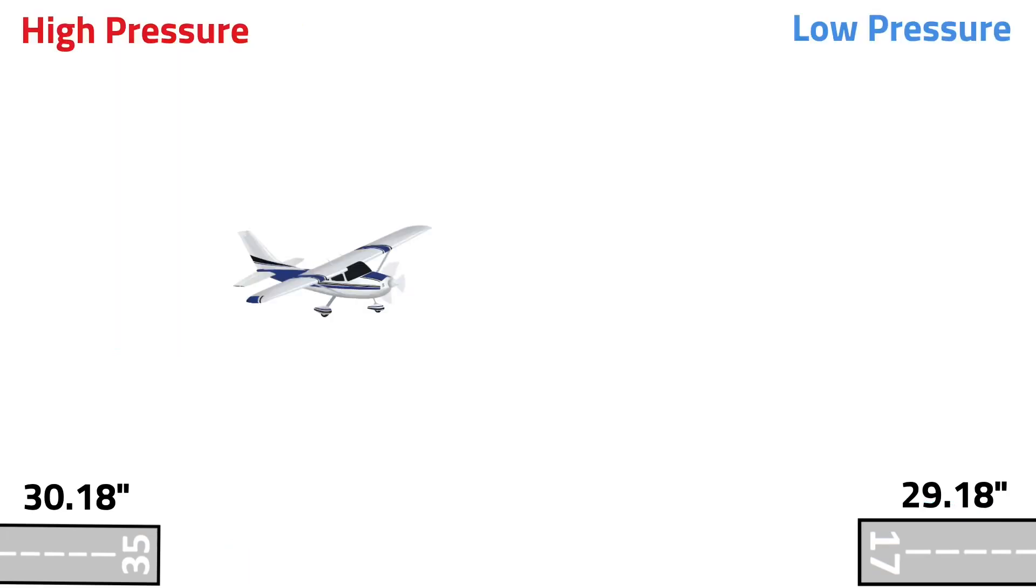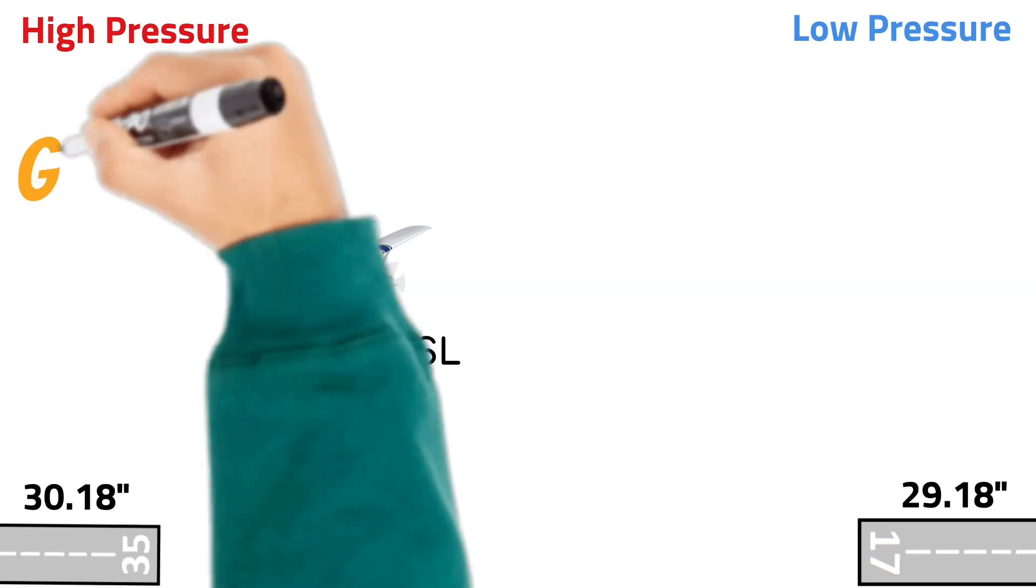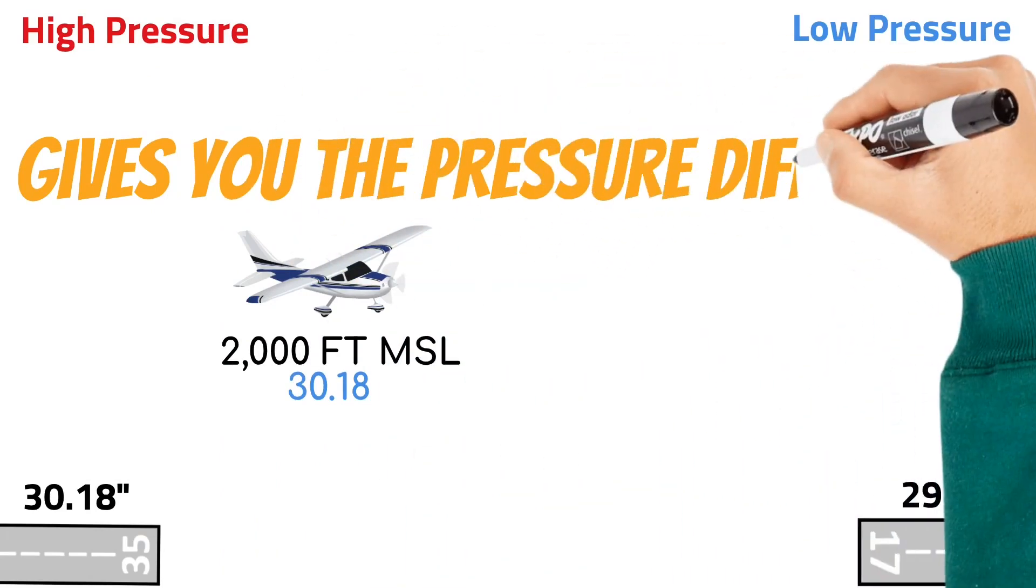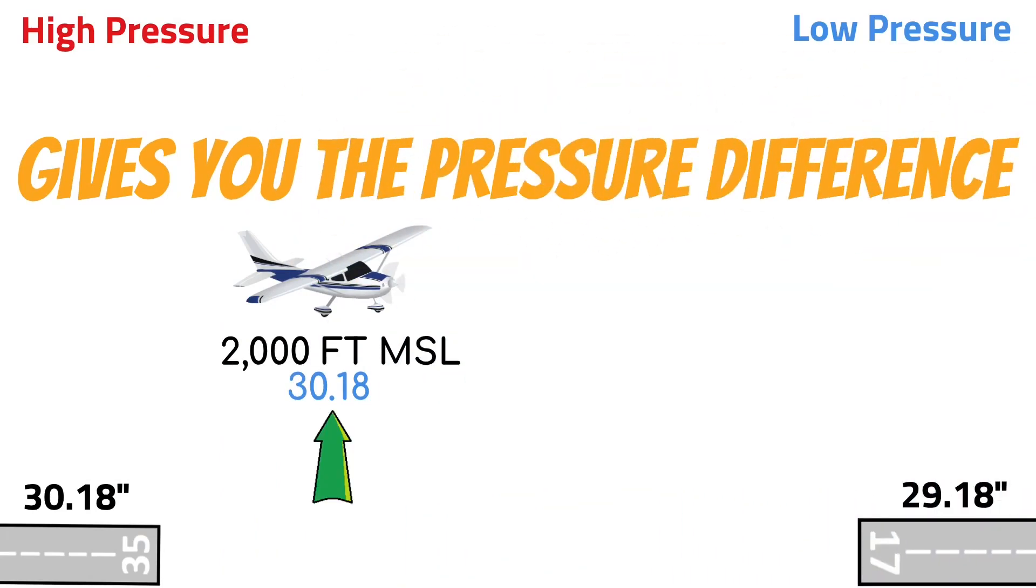Okay, let's say we took off and we climbed to 2000 feet MSL with an altimeter setting of 30.18. And we spun that in because that's what they were reporting at the field. So now what the altimeter does is it gives you the pressure difference between that number and what it's sensing. In this case, it's sensing 28.18, so it's giving you a reading of 2000 feet.